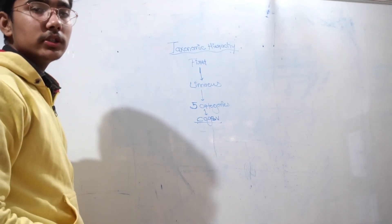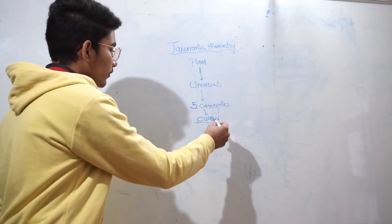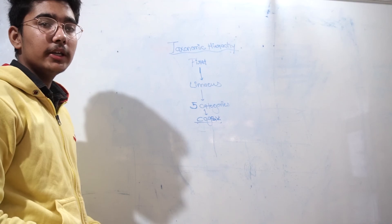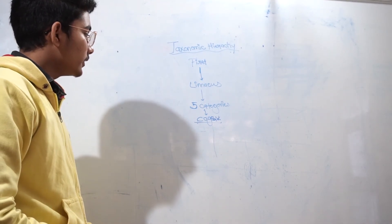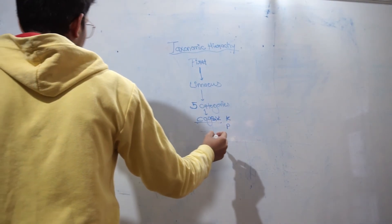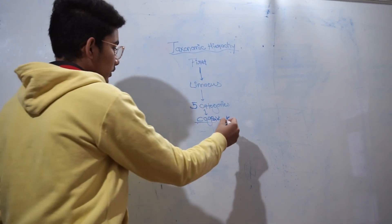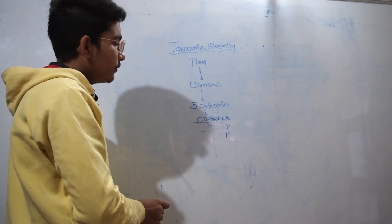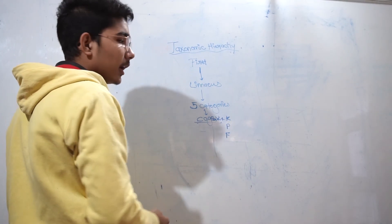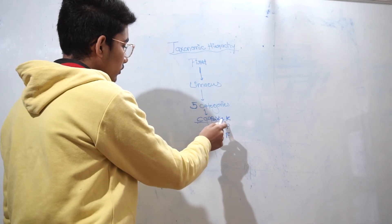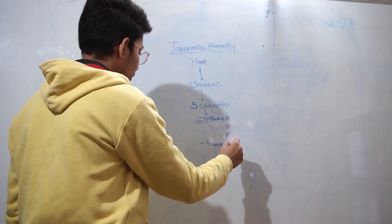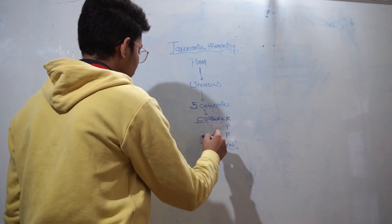Some scientists later deleted variety from these 5 categories and added 3 more categories: kingdom, phylum, and family. So 5 minus variety plus 3 gives us the 7 categories known today.